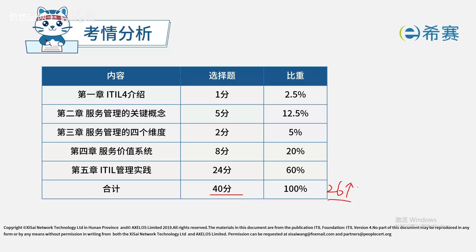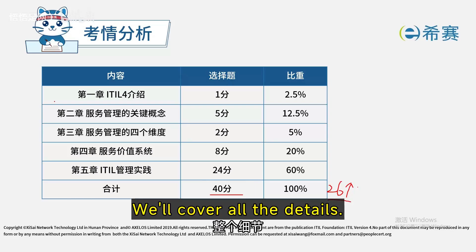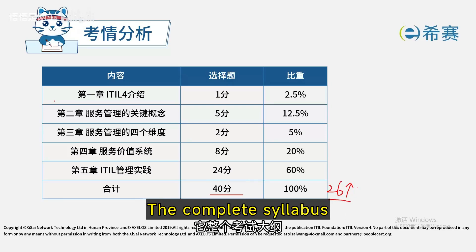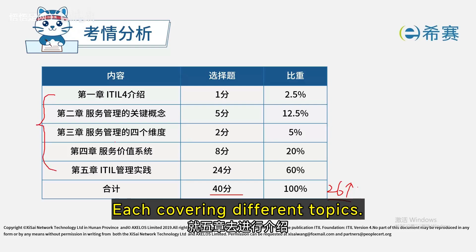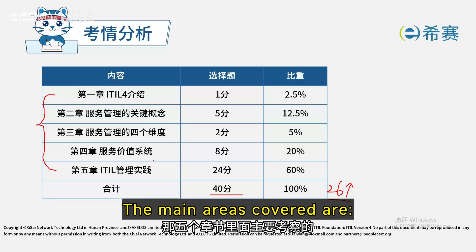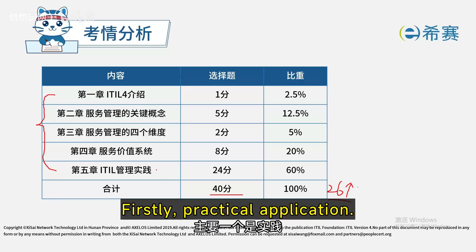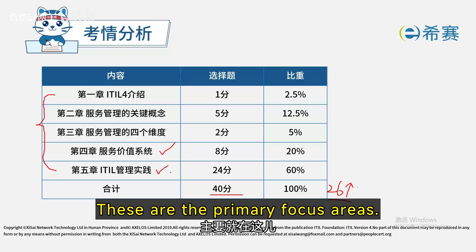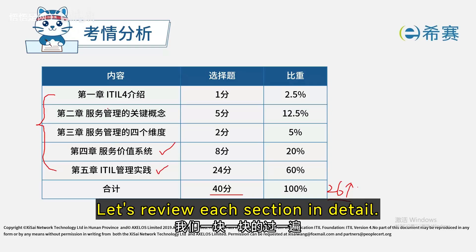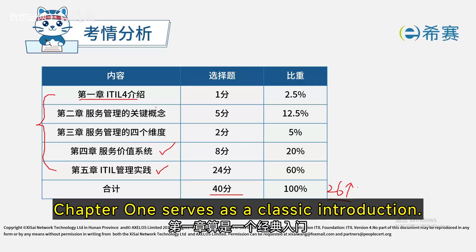Now let's review the key points of the exam syllabus. The complete syllabus is divided into five sections — we'll cover all five. The key focus across these sections is on practical skills and systems knowledge as the main points, with other topics less emphasized.